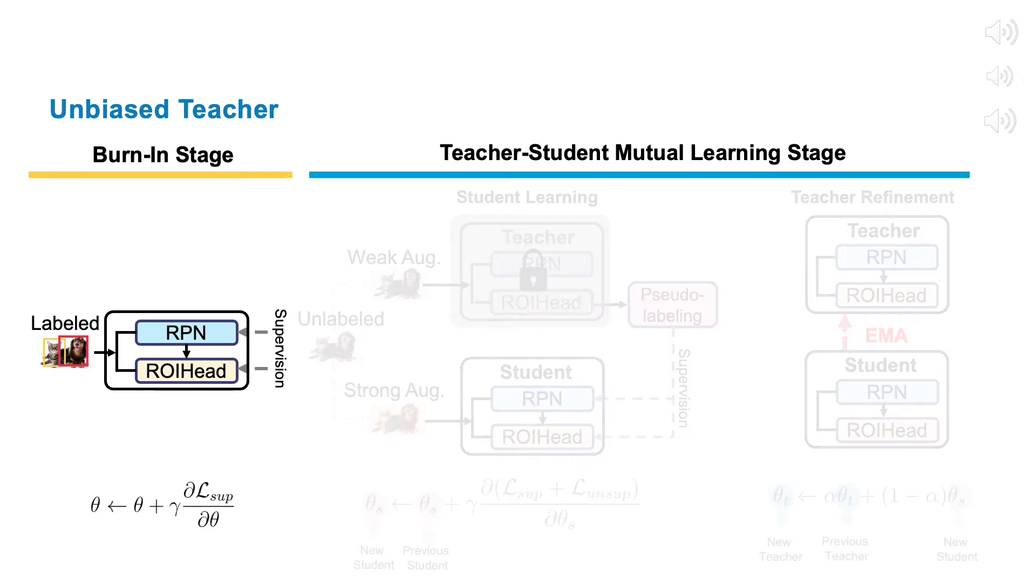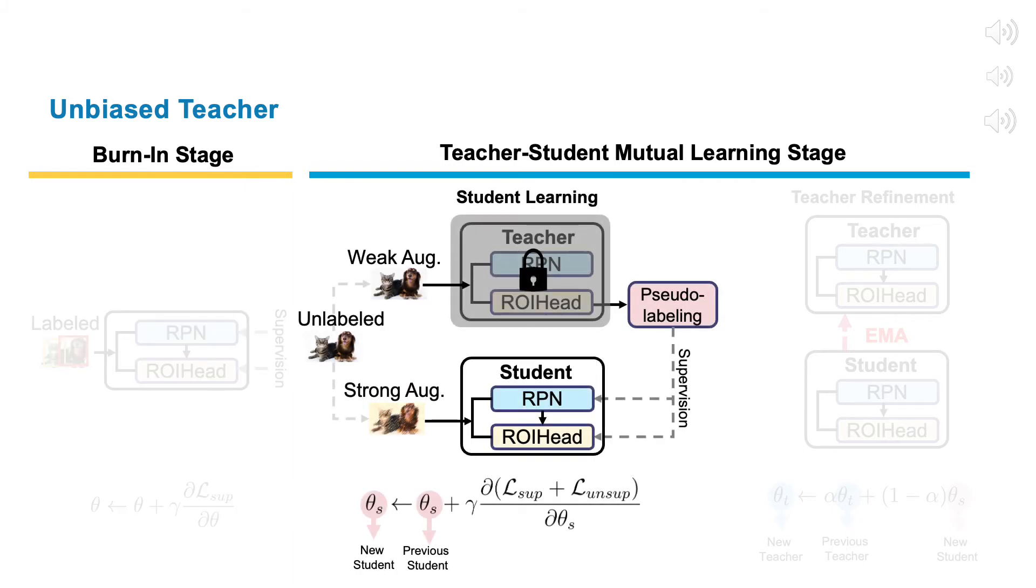In the burn-in stage, we simply train the object detector using the available labeled data to initialize the detector. In the student learning stage, the teacher takes the unlabeled image as input and generates corresponding pseudo-labels for training the student.